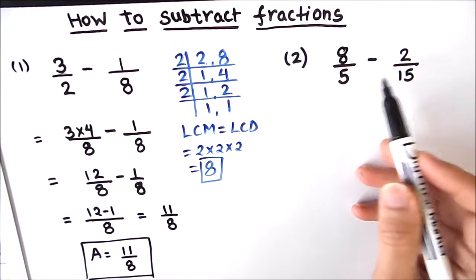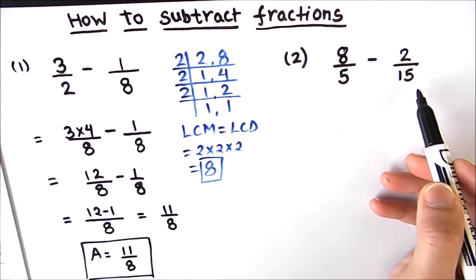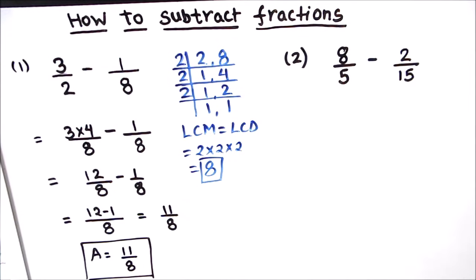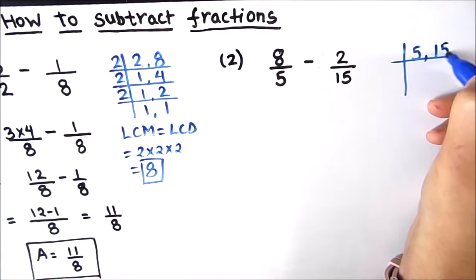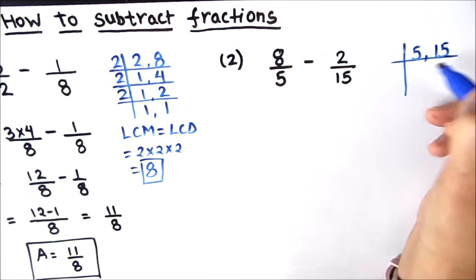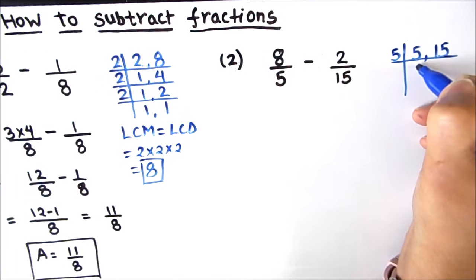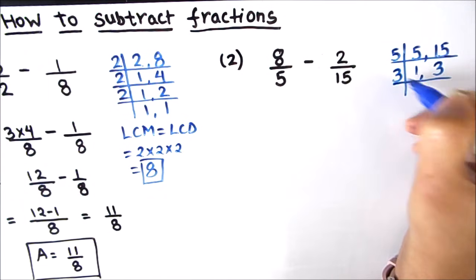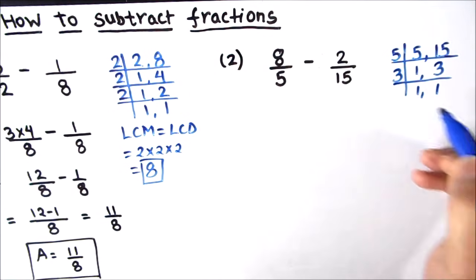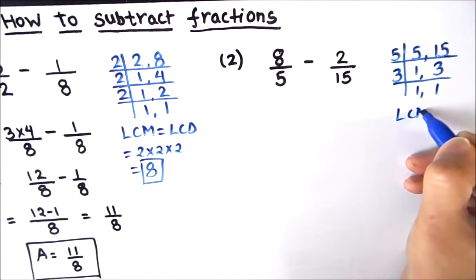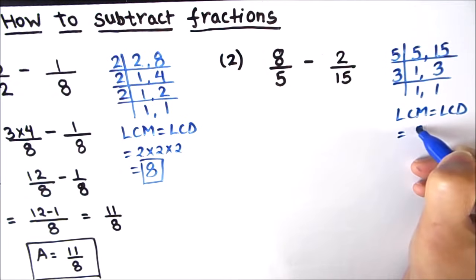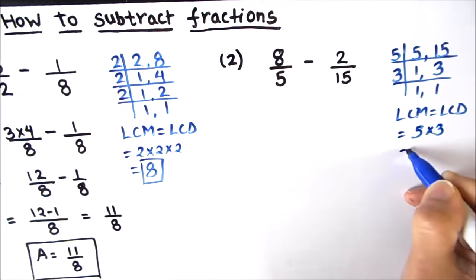Here we are subtracting 8 upon 5 minus 2 upon 15. The denominators are not the same, so we are going to first find the common denominator using the prime factorization method. The two numbers are 5 and 15; both are divisible by 5. 5 times 1 is 5, and 5 times 3 is 15. Since 3 is a prime number, 3 times 1 is 3. So our LCM, or least common denominator, is 5 times 3, which equals 15.